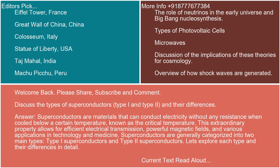Answer. Superconductors are materials that can conduct electricity without any resistance when cooled below a certain temperature, known as the critical temperature. This extraordinary property allows for efficient electrical transmission, powerful magnetic fields, and various applications in technology and medicine. Superconductors are generally categorized into two main types: Type I and Type II. Let's explore each type and their differences in detail.